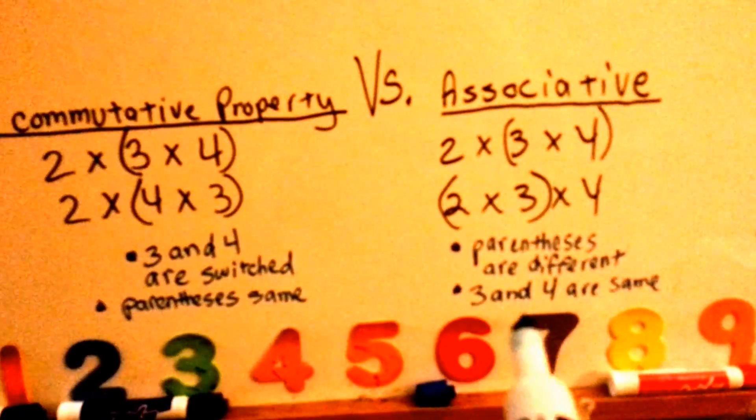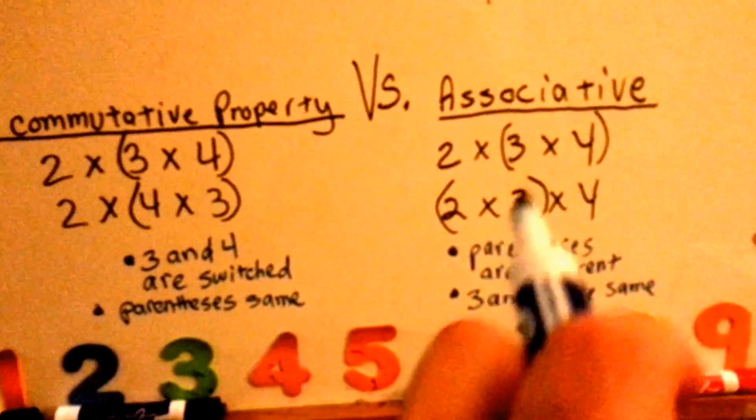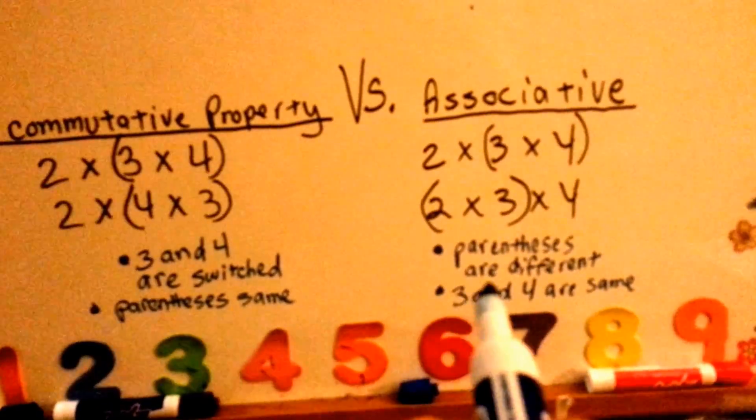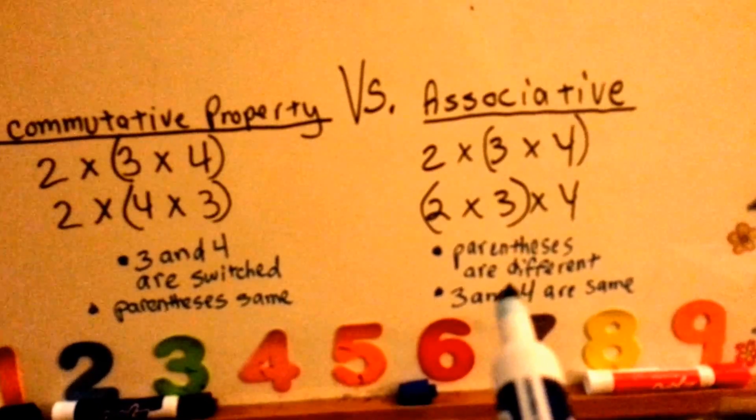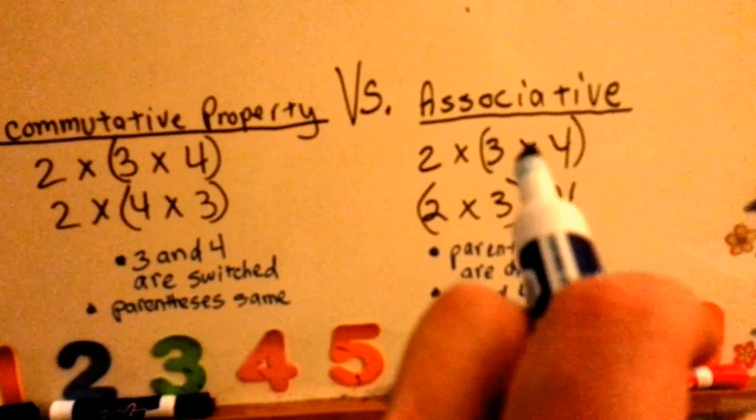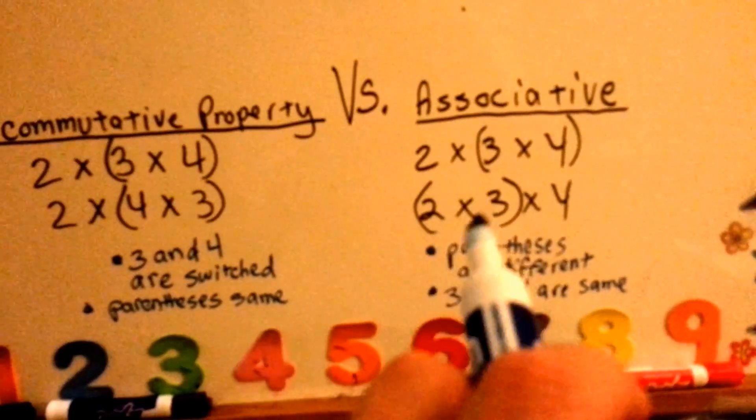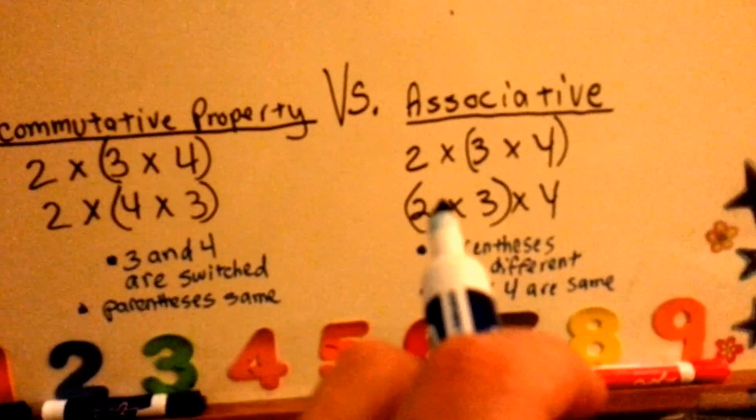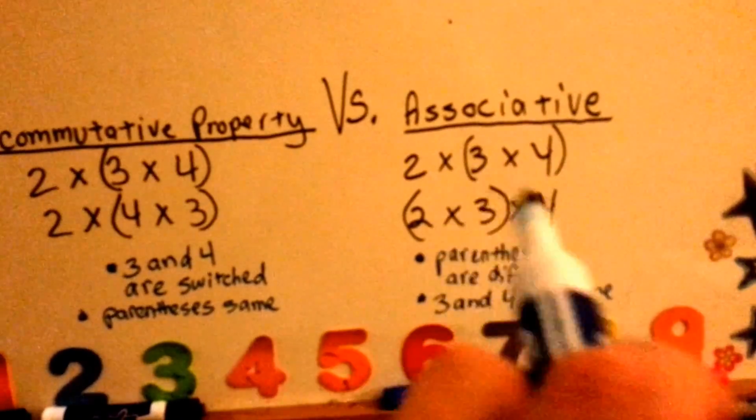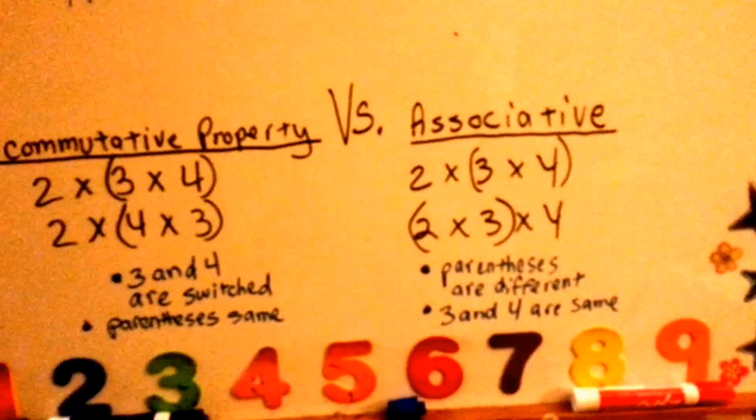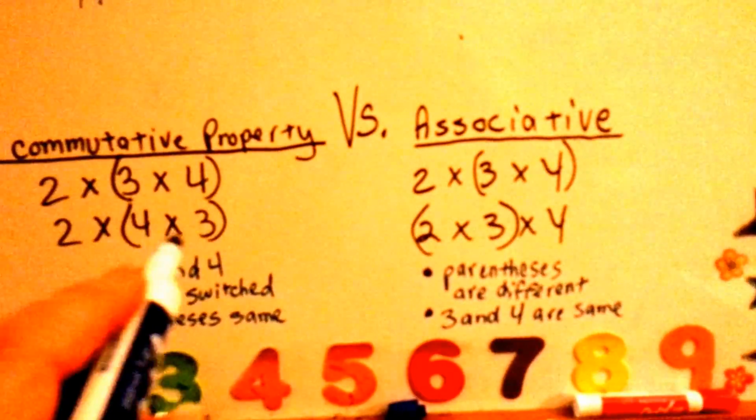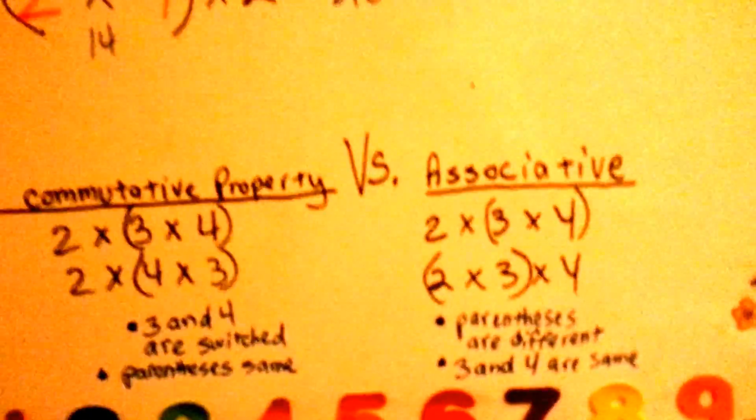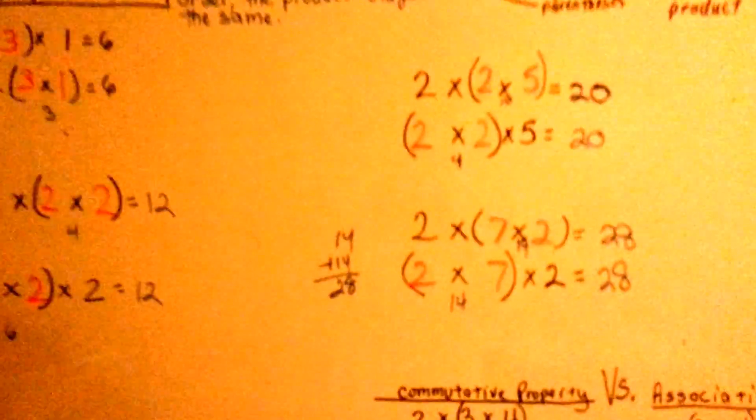In the associative one, the three and four are all in the same place. All the numbers are staying in their same place or staying home. But the parentheses are different. See, they're grouped different. So, they have different associates. An associate is someone you hang out with or a friend or a coworker, like a business associate. So it doesn't matter which one you group, the answer will be the same, just like in commutative. Even though you switch these around, the answer will still be the same. So that's the associative property of multiplication.